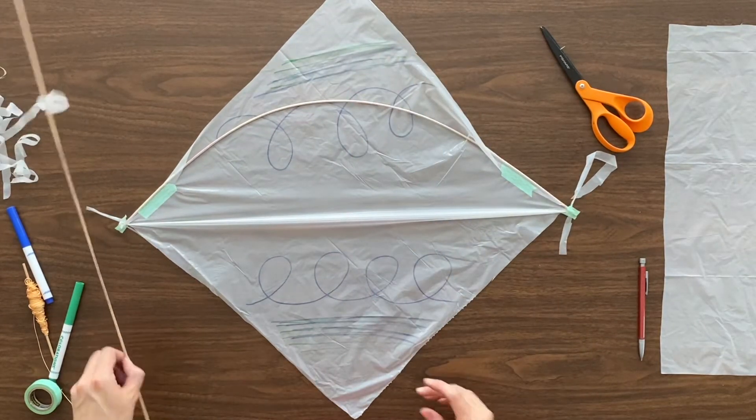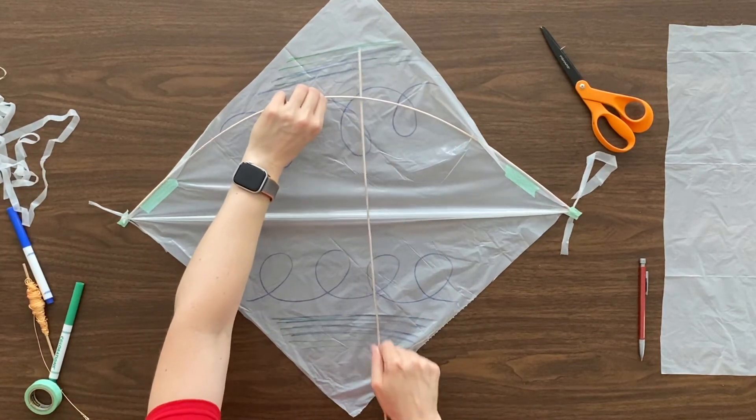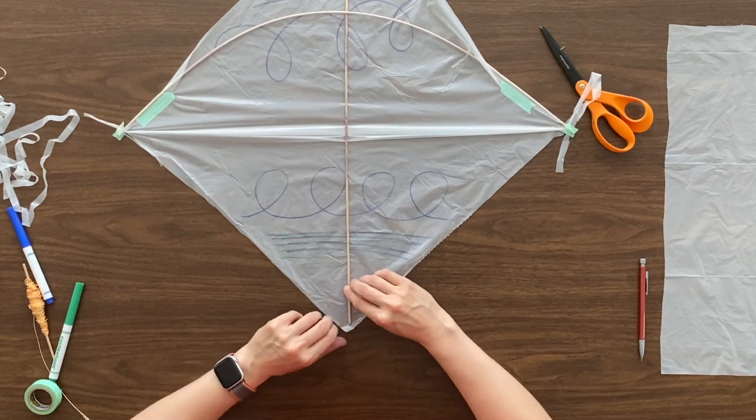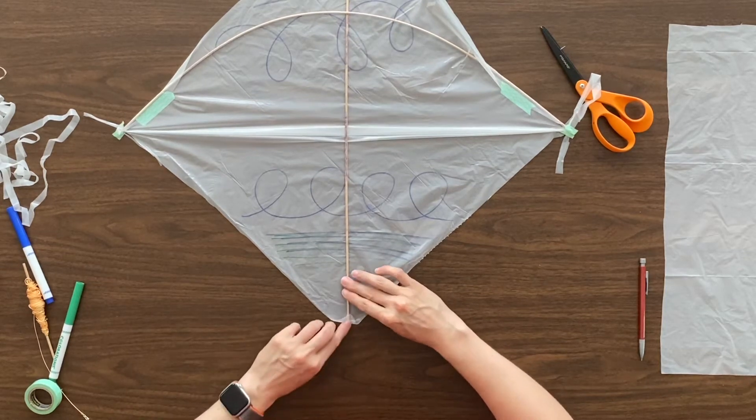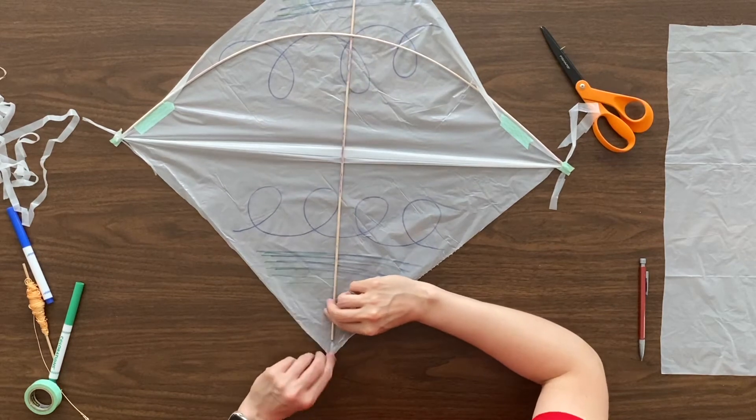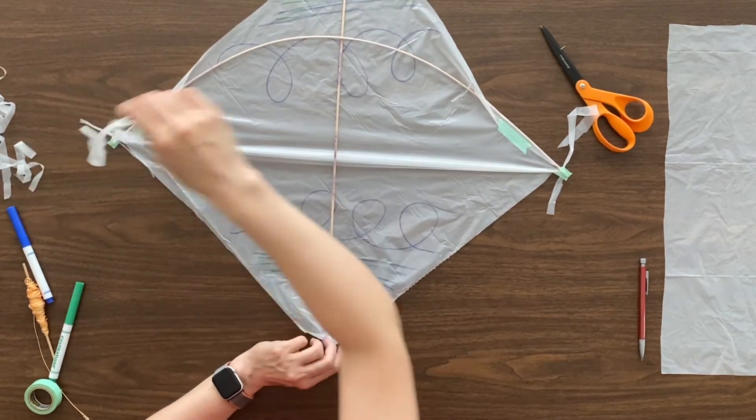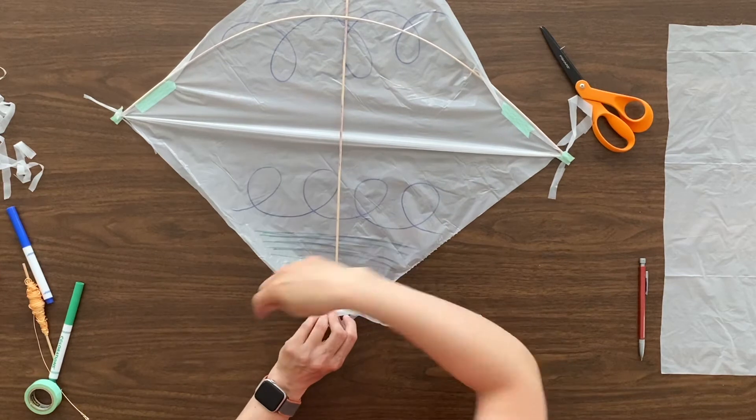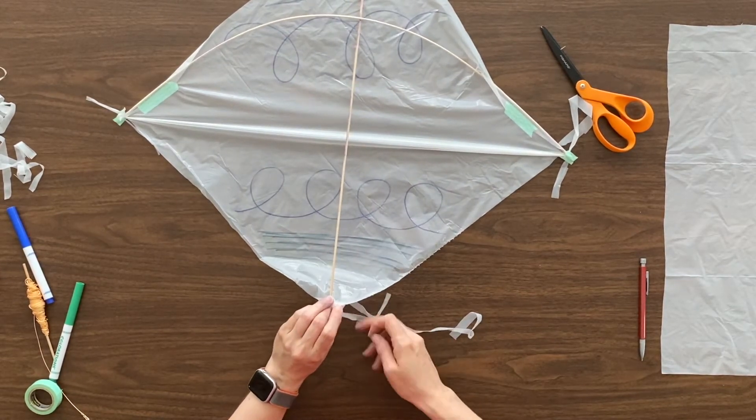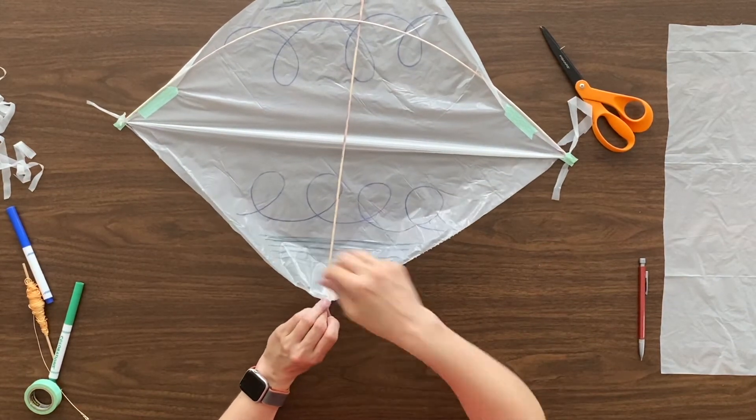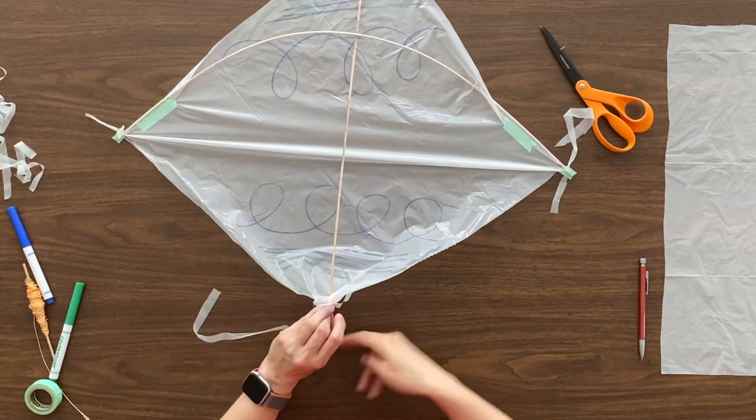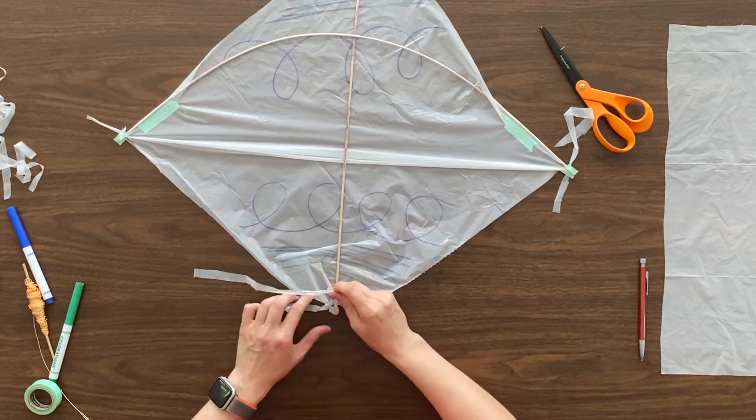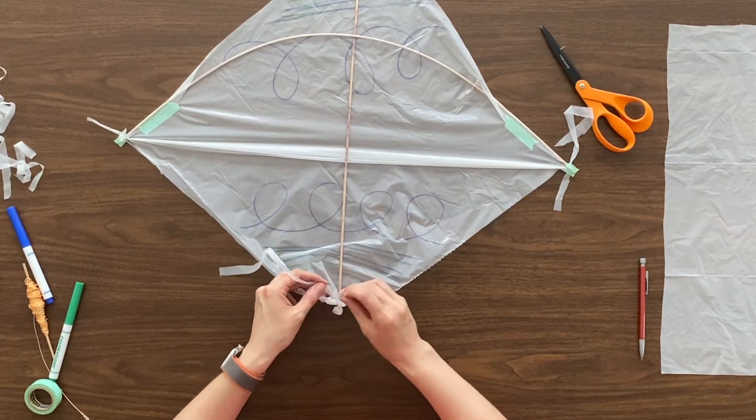So you have a crossbar. Take your shorter dowel, slide it under your crossbar. Now we're going to do the bottom and the top. So the bottom, just fold that plastic over just a little bit over the end of the dowel, take a plastic strip, wrap that around several times so that it's nice and secure, and tie it in a knot.